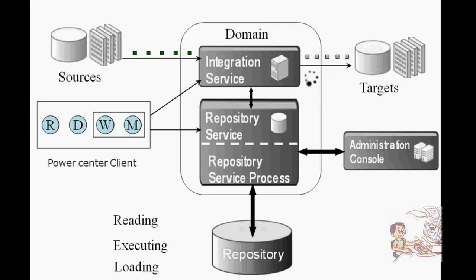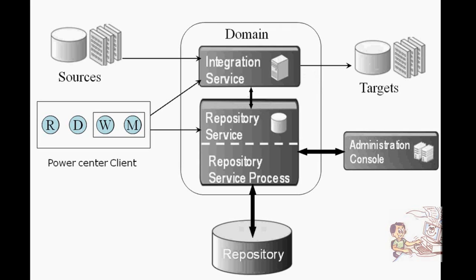The integration service has its own reader threads and loader threads, so it reads the data and loads it into the targets. In real time, we are working with millions of records. If you are executing one flow and other people are also executing flows, the integration service can become busy. At that time, multiple integration services can be created on the same repository — if one is busy, we can use another.